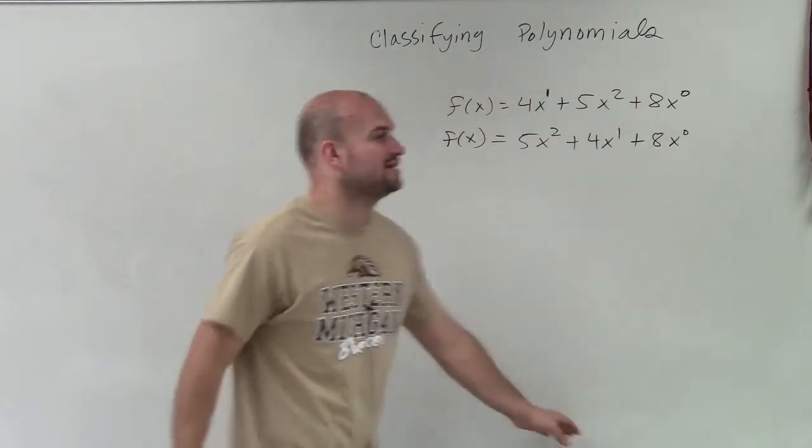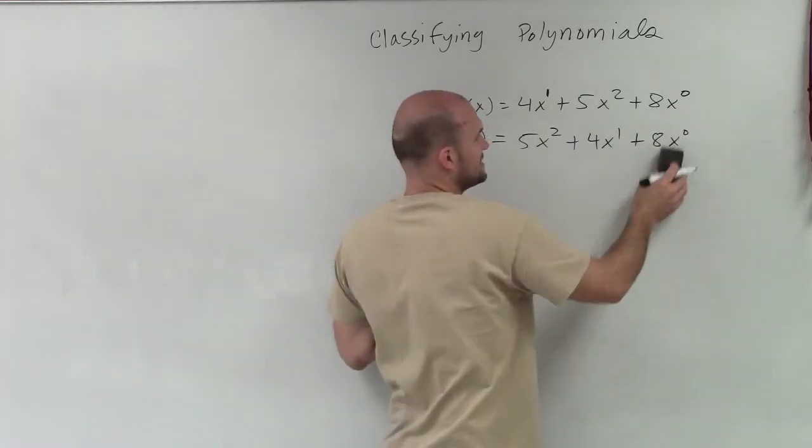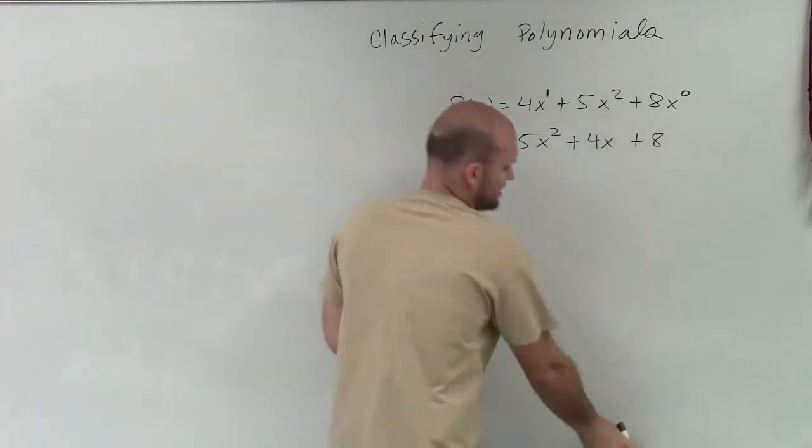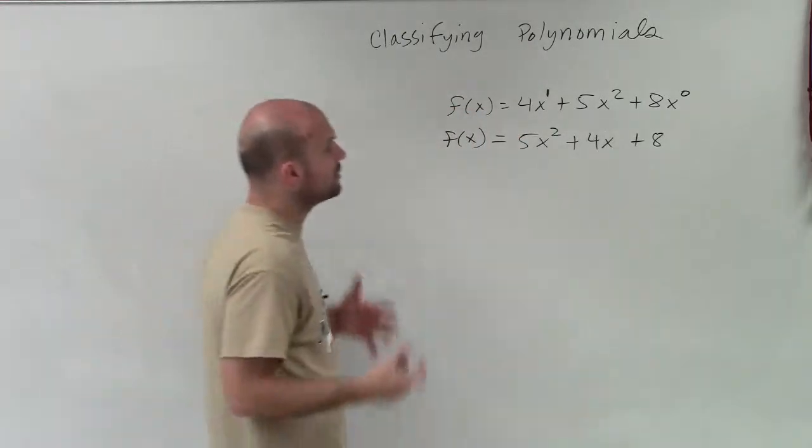All right, now we really don't need to write the 1 up here, but I just want you guys to see how this goes down in descending order. x to the 0 is just 1, so it'll just leave us with 8, and we don't need to write x to the 1. But now we have our polynomial in descending order where we can determine the degree.